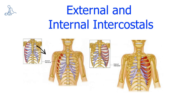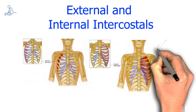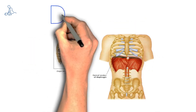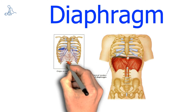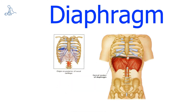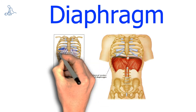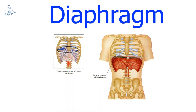The diaphragm. The origin of the diaphragm is the anterior lumbar vertebrae, the xiphoid process and the inner costal cartilages of ribs seven to twelve. The insertion of the diaphragm is the central tendon of the diaphragm. The action of the diaphragm is to expand the thoracic cavity during inspiration.